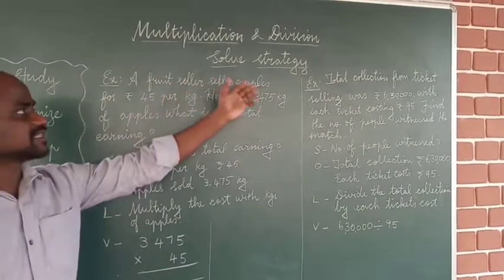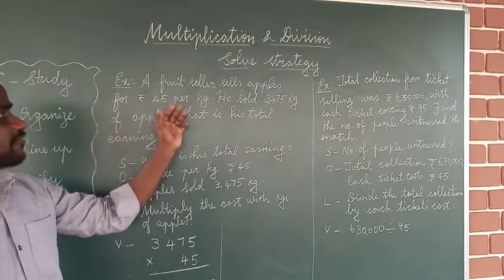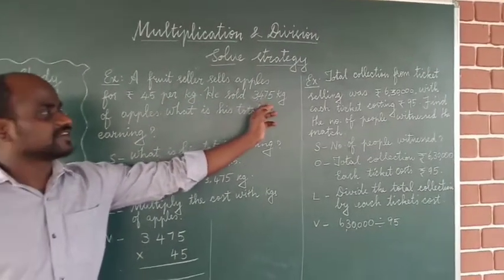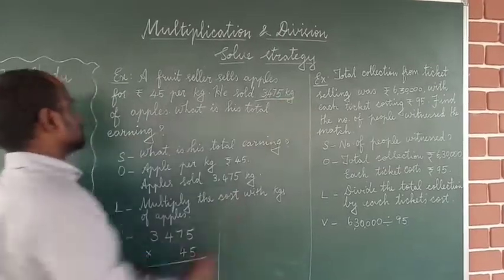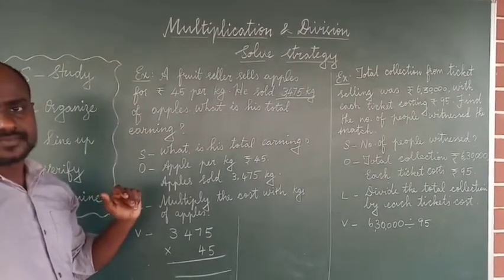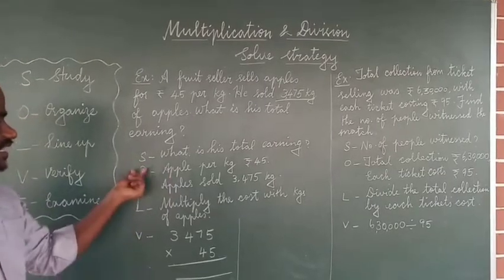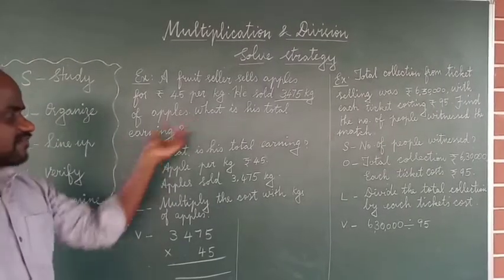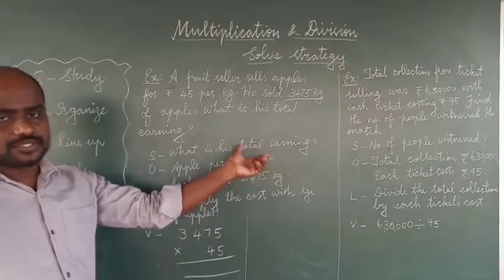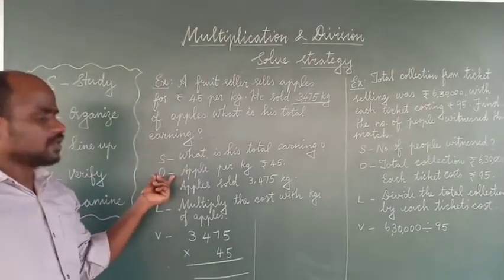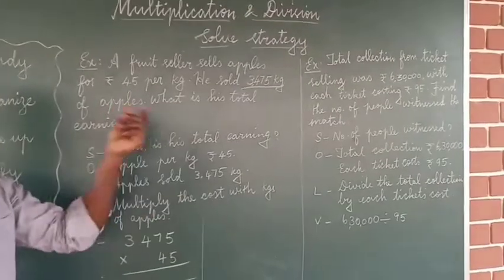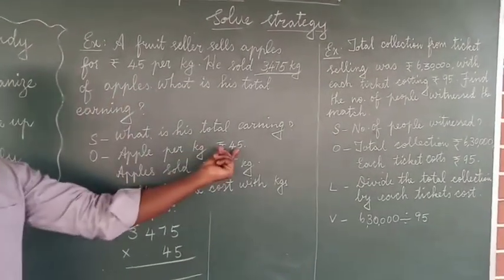First example: A fruit seller sells apples for rupees 45 per cage and sold three thousand four hundred and seventy-five kilograms of apples. What is the total earnings? So, S — study: what are they asking for? The total earnings — that's what we need to find out.